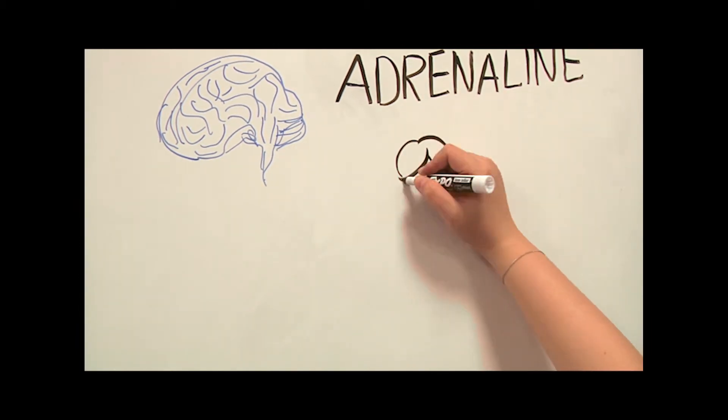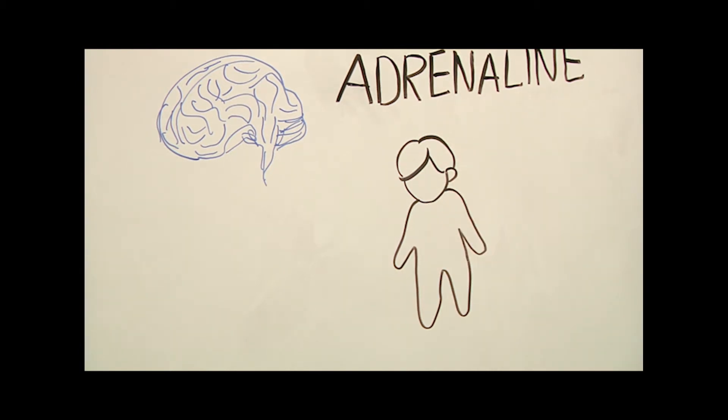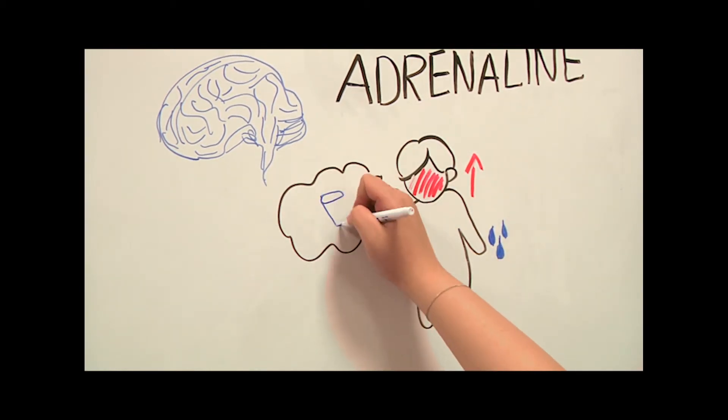Adrenaline. The initial stages of falling for someone activates your stress response, increasing your blood levels of adrenaline. This has the charming effect that when you unexpectedly bump into your new love, you start to sweat, your heart races and your mouth goes dry.